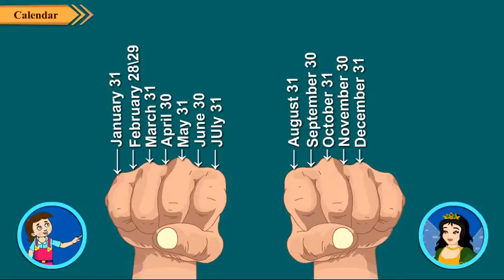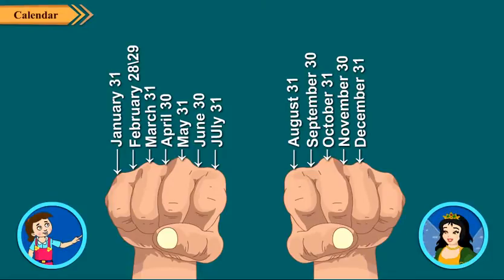In most years, February has 28 days. But in a leap year, it has 29 days. And a leap year comes after every 4 years.